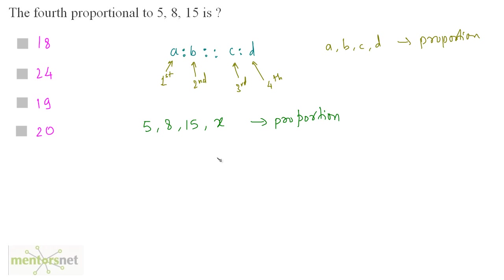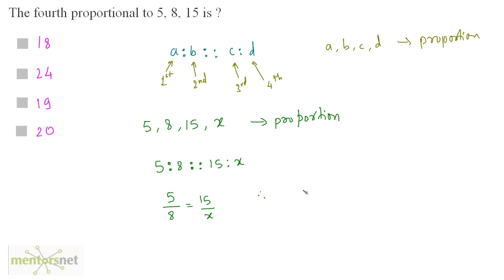When these numbers are in proportion, I can say that the ratio 5 is to 8 is proportionate to 15 is to x. Therefore, 5 by 8 equals 15 by x. Proportion is nothing but equality of ratios. So we can find x: x is equal to 15 times 8 by 5, which gives x equals 24. And we have our answer.